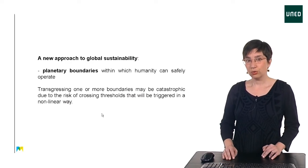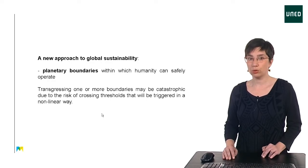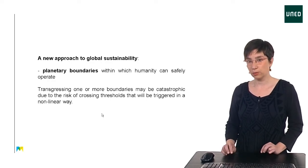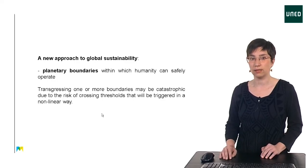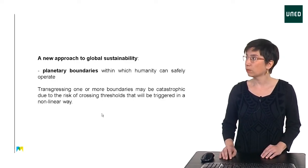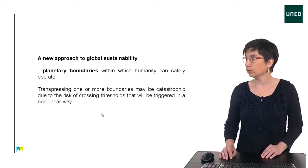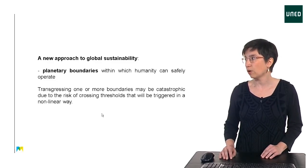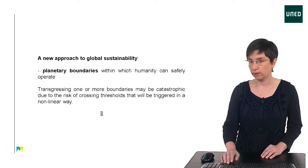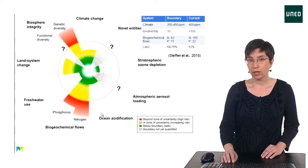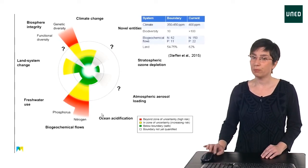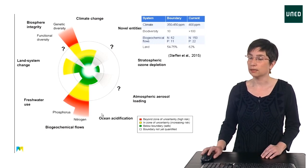In 2009, Johan Rockström and his team proposed a new approach to global sustainability. They defined nine planetary boundaries within which they expected humanity to operate safely. Transgressing one or more boundaries may be catastrophic due to the risk of crossing thresholds that will be triggered in a non-linear way. Nowadays, four planetary boundaries have already been transgressed.